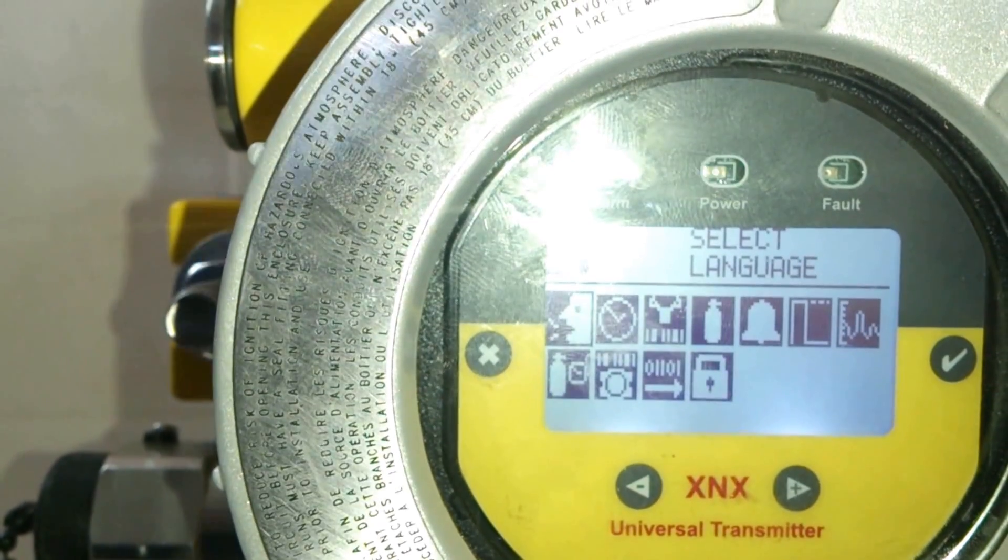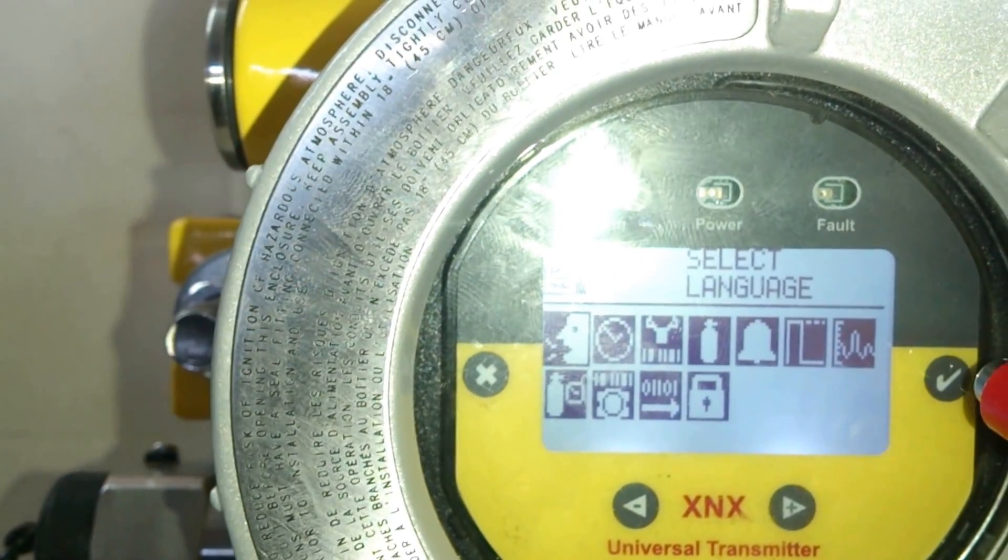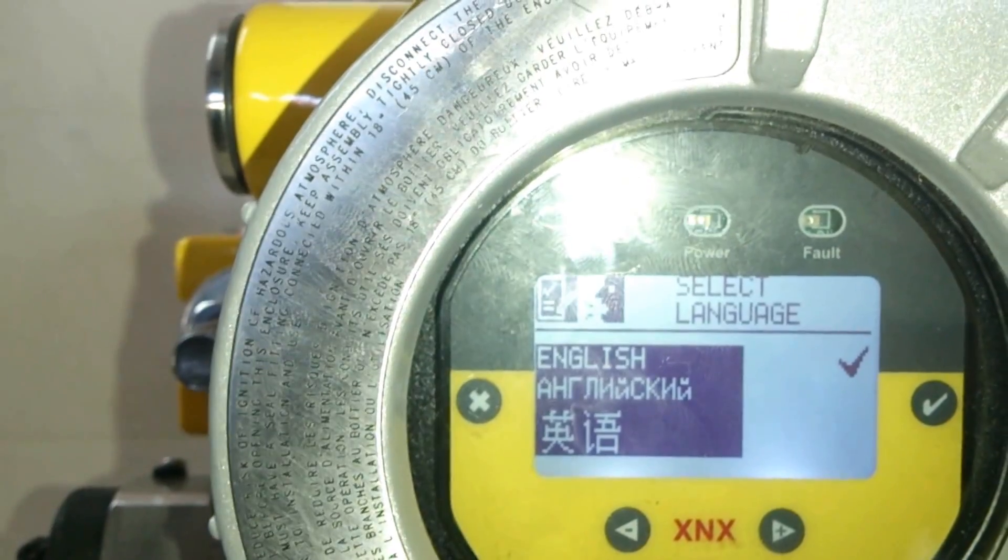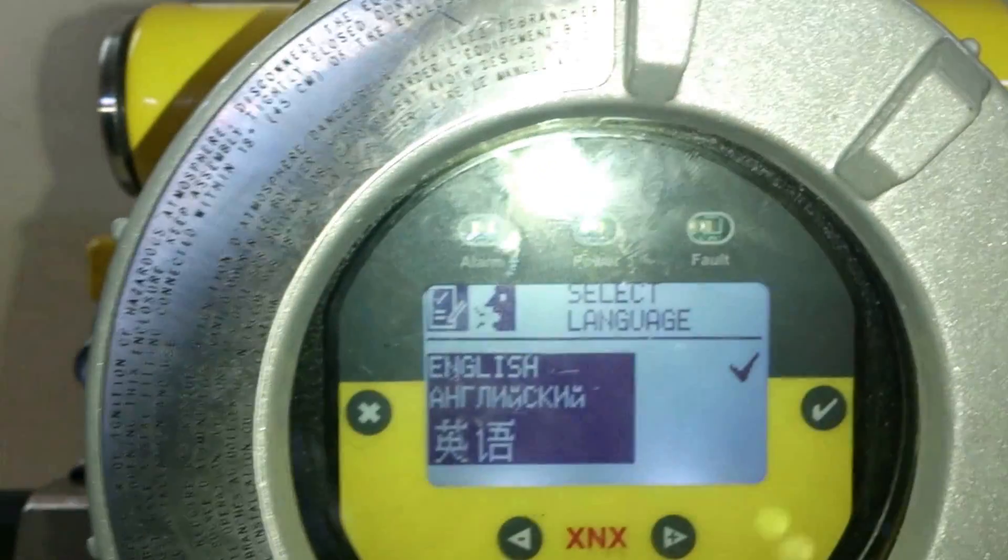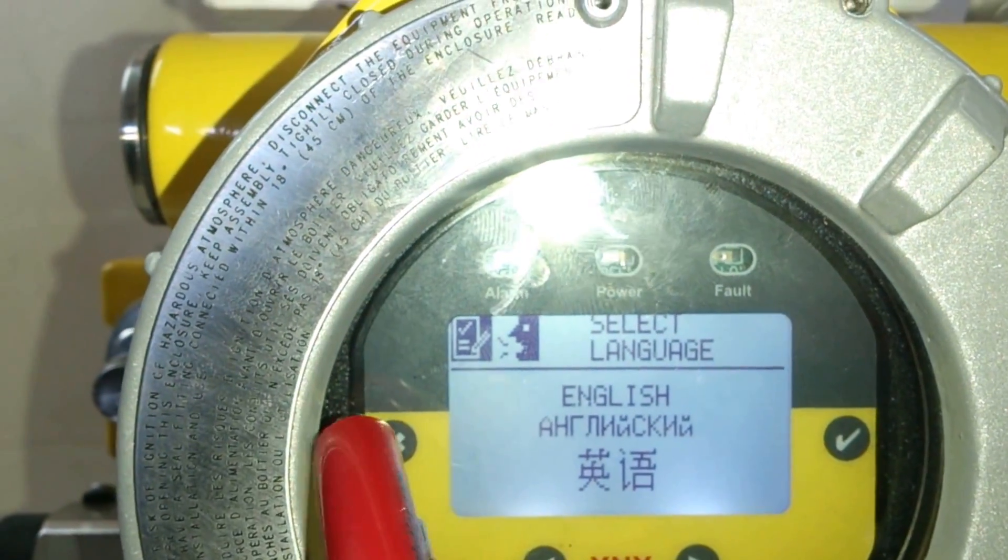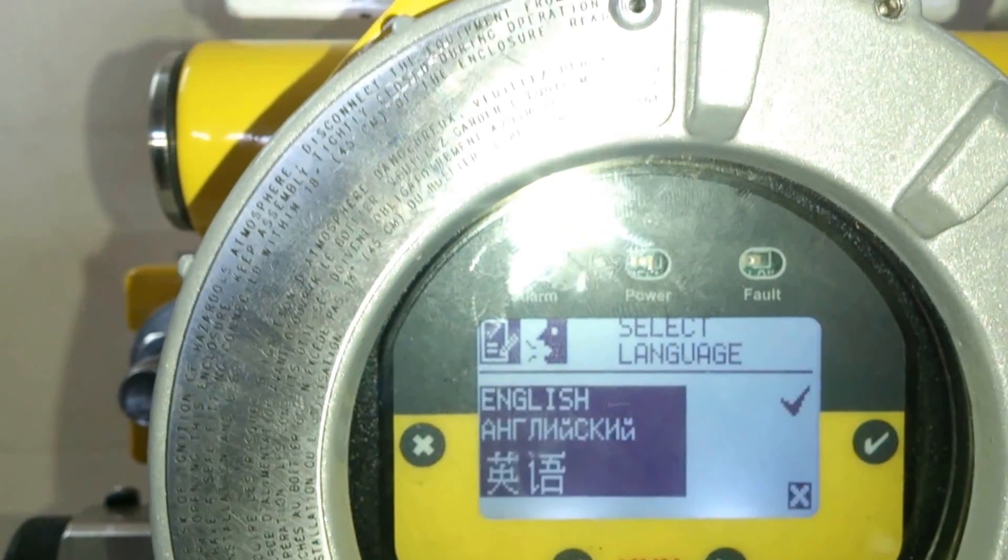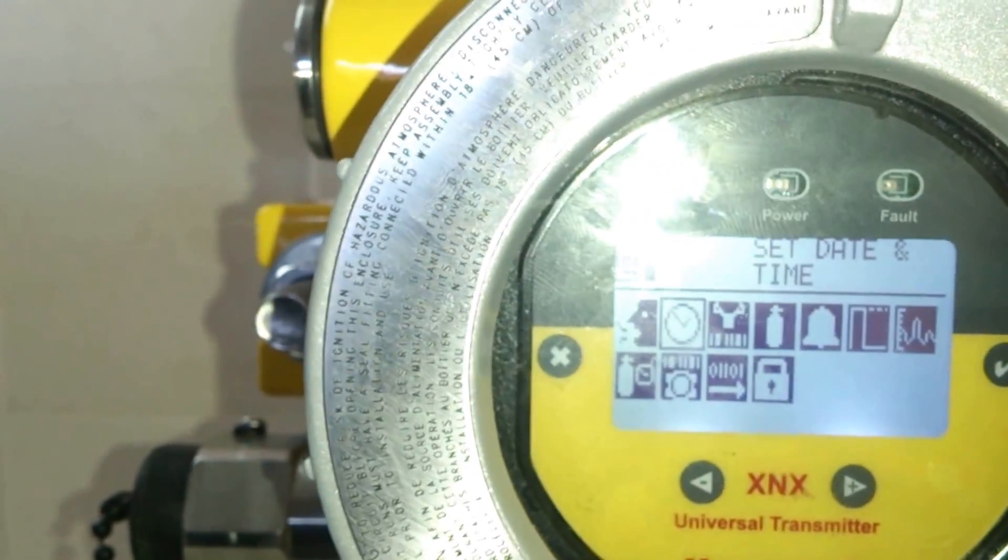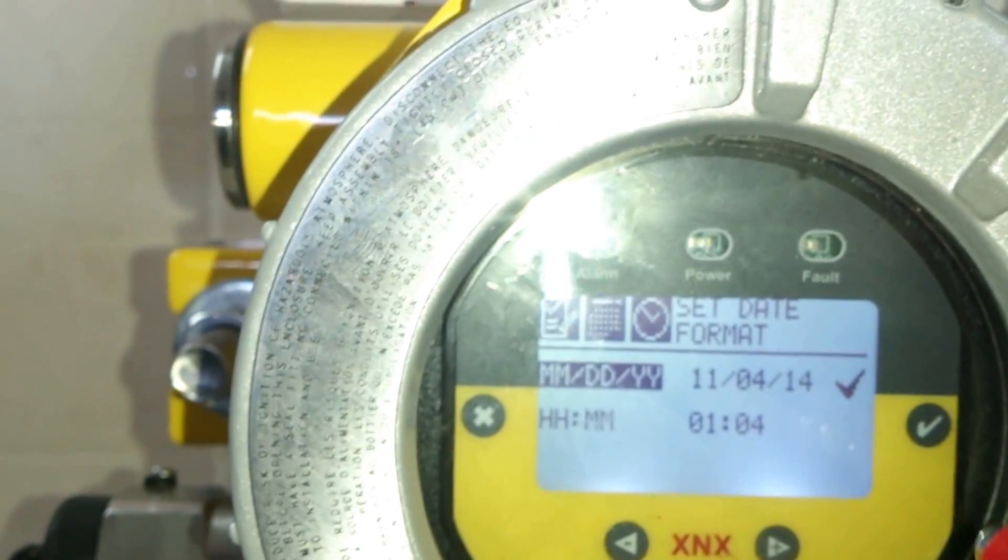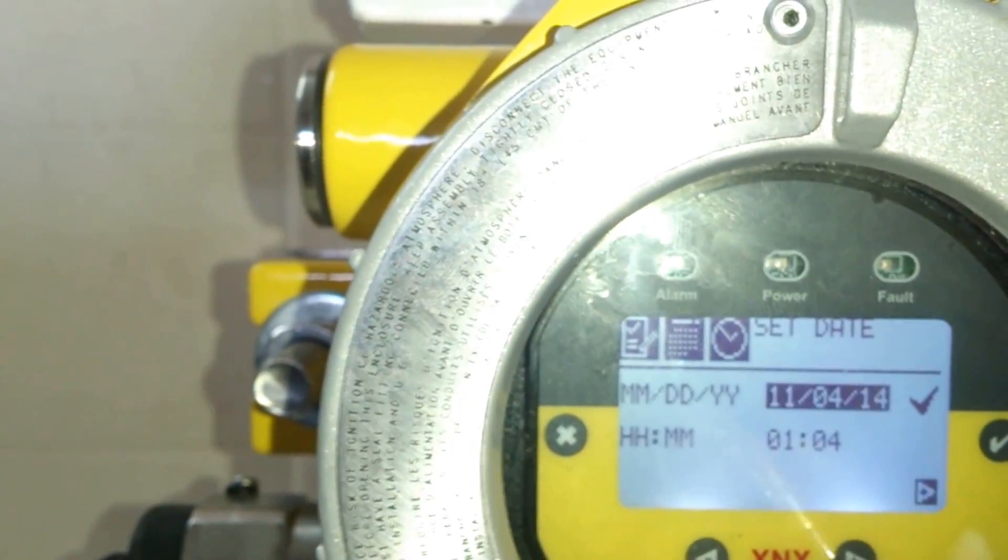Under configure we have various options. Language which is already preset to English. We go to the previous menu. Next is date and time settings which is already preset. We go to the previous menu now.